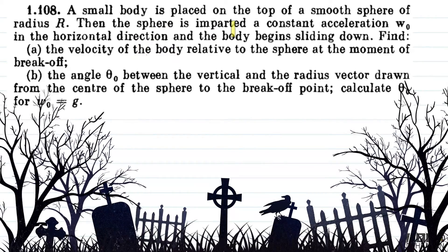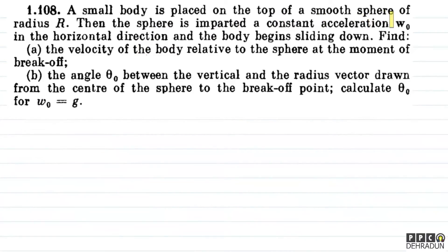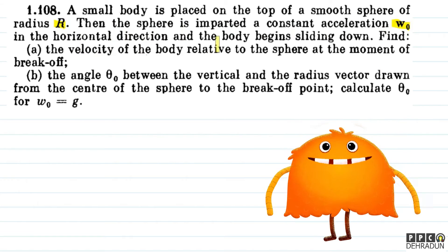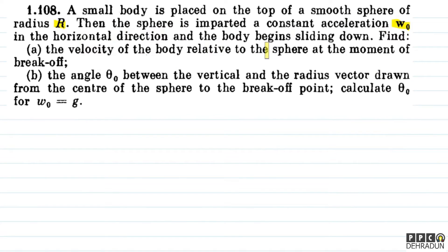The question says: a small body is placed on the top of a smooth sphere of radius R, then the sphere is imparted a constant acceleration w0 in the horizontal direction and the body begins sliding down. There are two parts. First part: the velocity of the body relative to the sphere at the moment of break-off. Second part: the angle theta0 between the vertical and the radius vector drawn from the center of the sphere to the break-off point. Calculate theta0 for w0 equal to g.